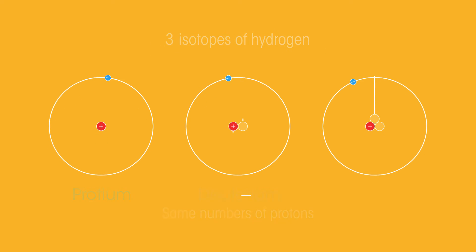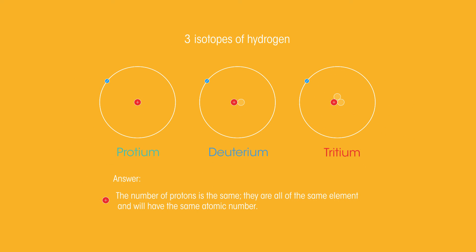Here are three known isotopes of hydrogen. Pause the video and see if you can see what is the same and what is different between the isotopes. The number of protons is the same, which makes sense because they are all of the same element and will have the same atomic number.